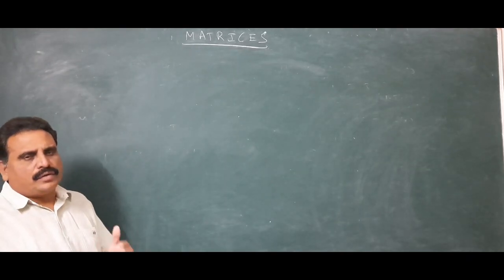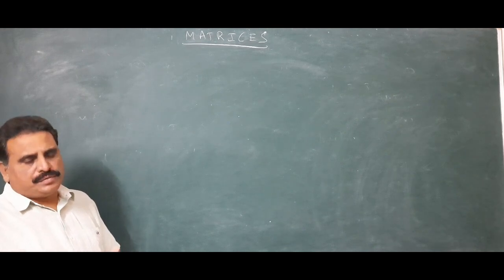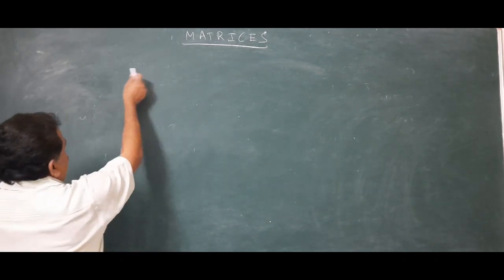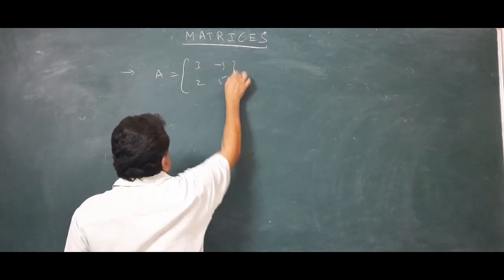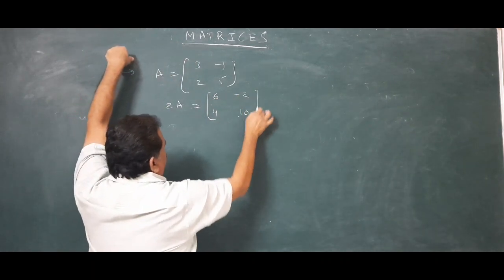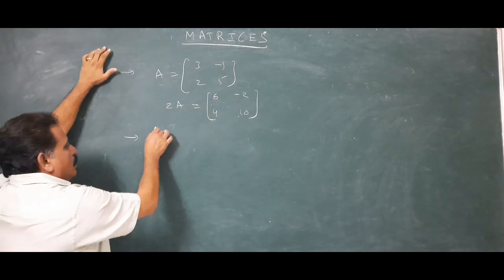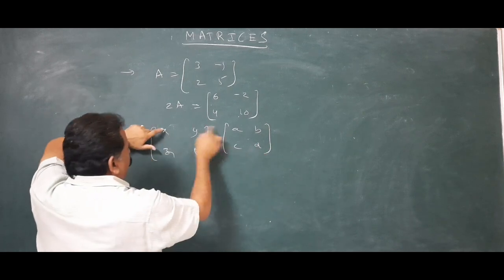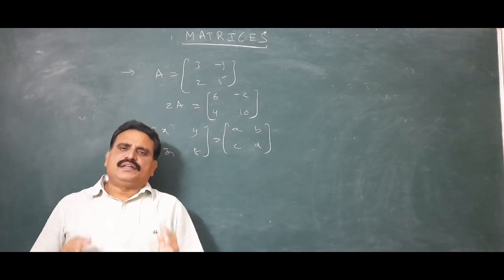Now we discuss operations on matrices: addition, difference, equality, and scalar multiplication. For scalar multiplication, if A = [3, -1, 2; 5, 2, 8], then 2A = [6, -2, 4; 10, 4, 16] — each element is multiplied by 2. For equality of two matrices, if [x, y; z, t] = [a, b; c, d], then x=a, y=b, z=c, t=d — corresponding elements must be equal.